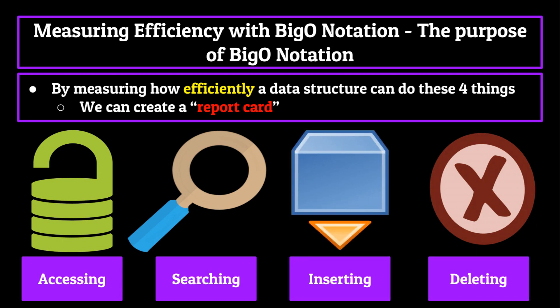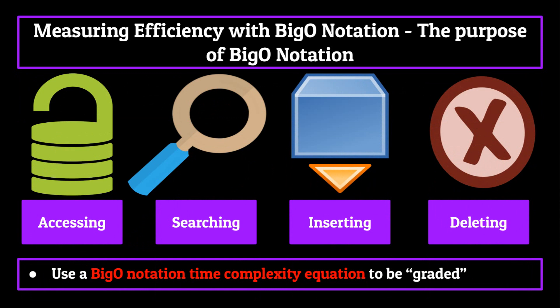By looking at a data structure's report card, if you will, we can get a better understanding of what they're good at and what they're bad at. So if Big O notation basically creates a report card, there must be some way to actually grade each of these functions. The four criteria mentioned—accessing, searching, inserting, and deleting—all use Big O notation time complexity equations to be graded.